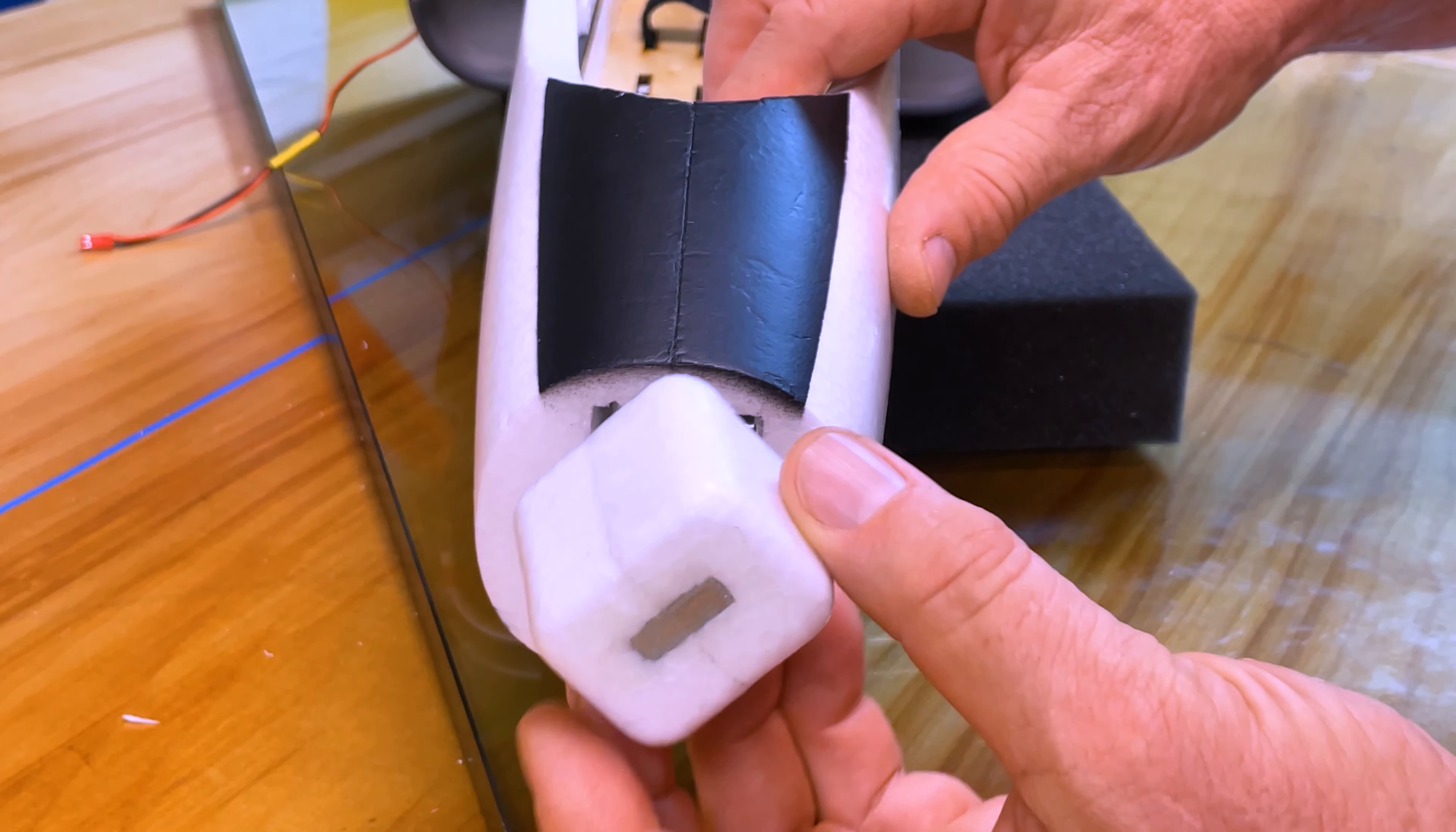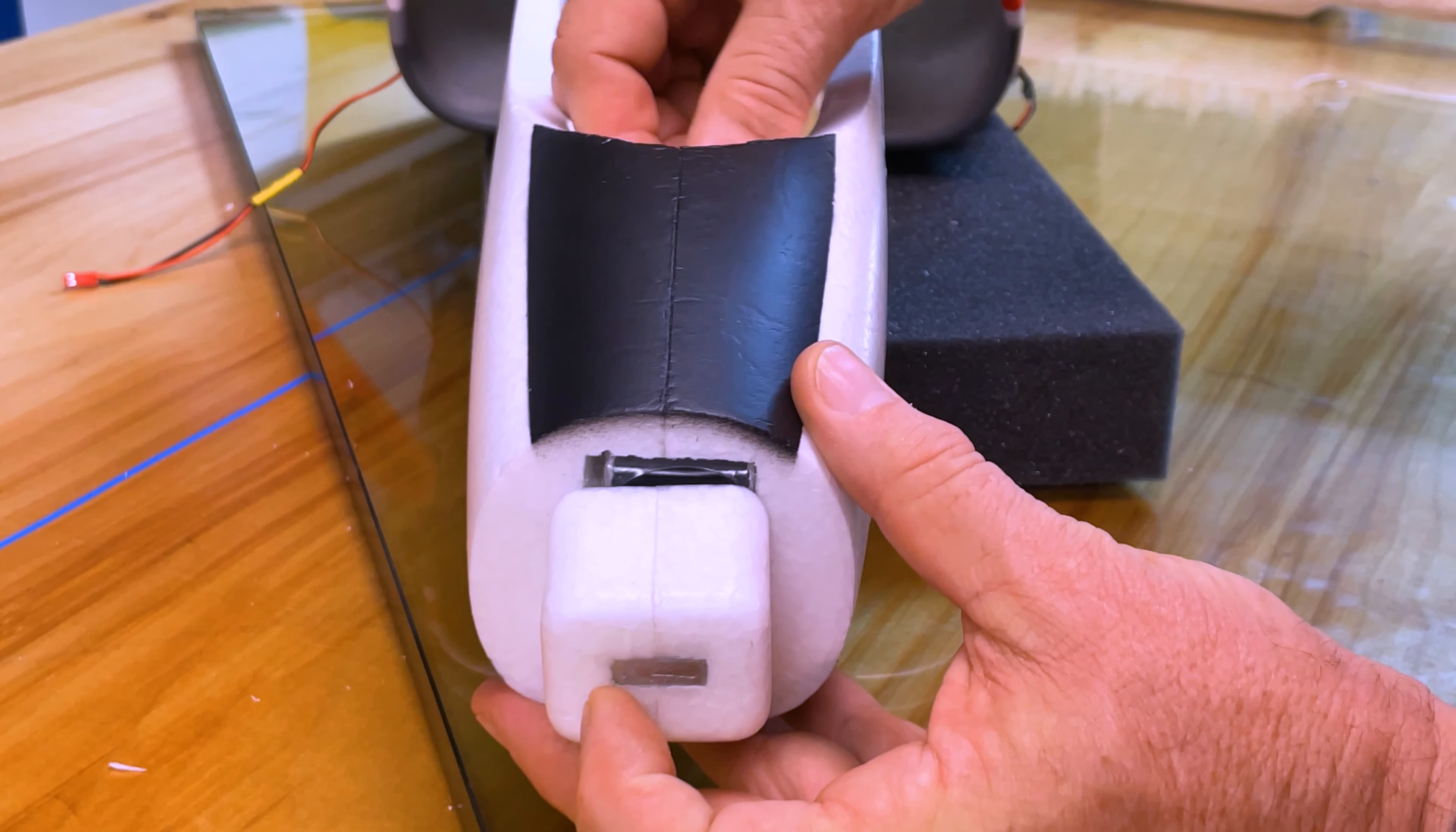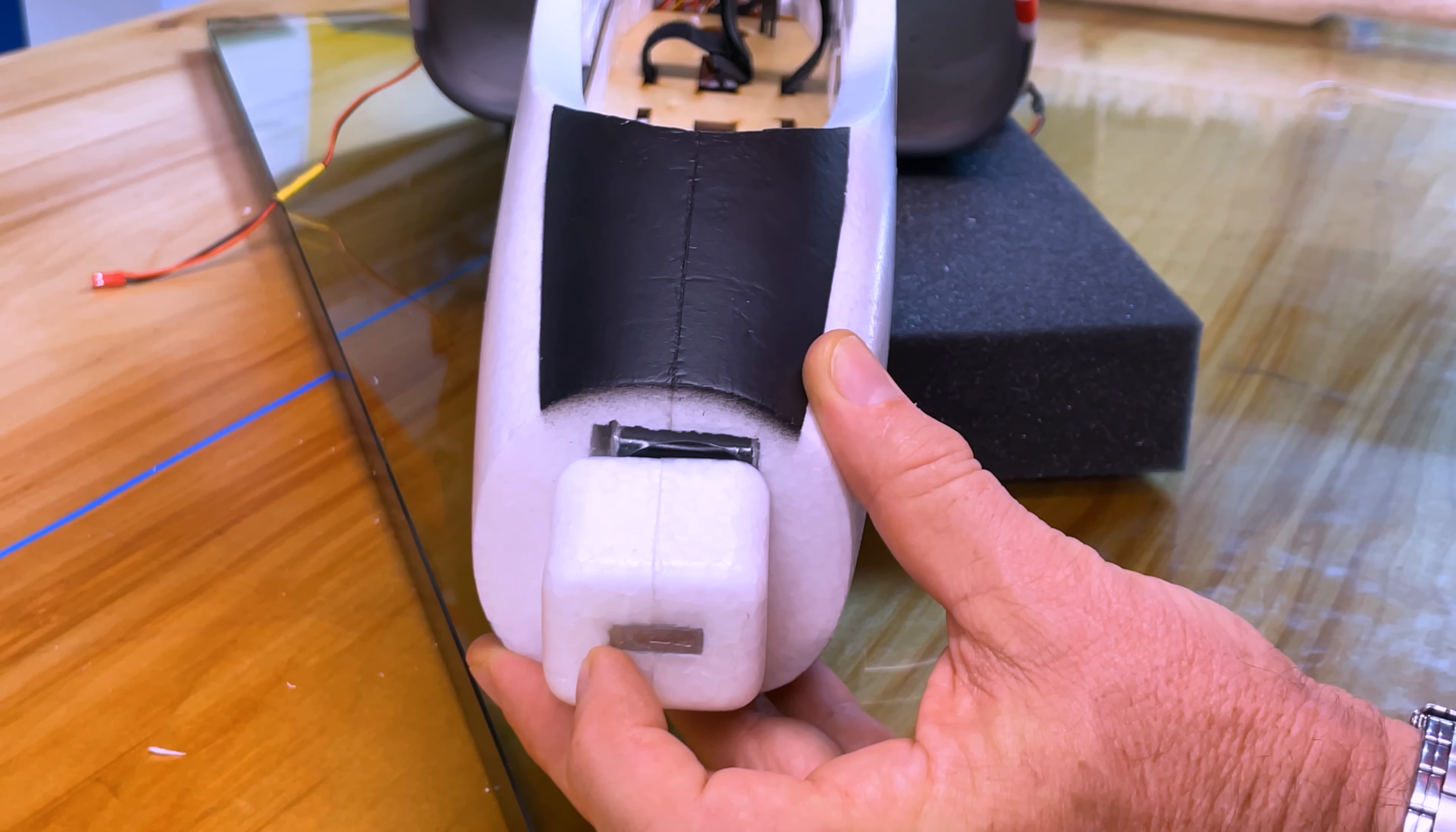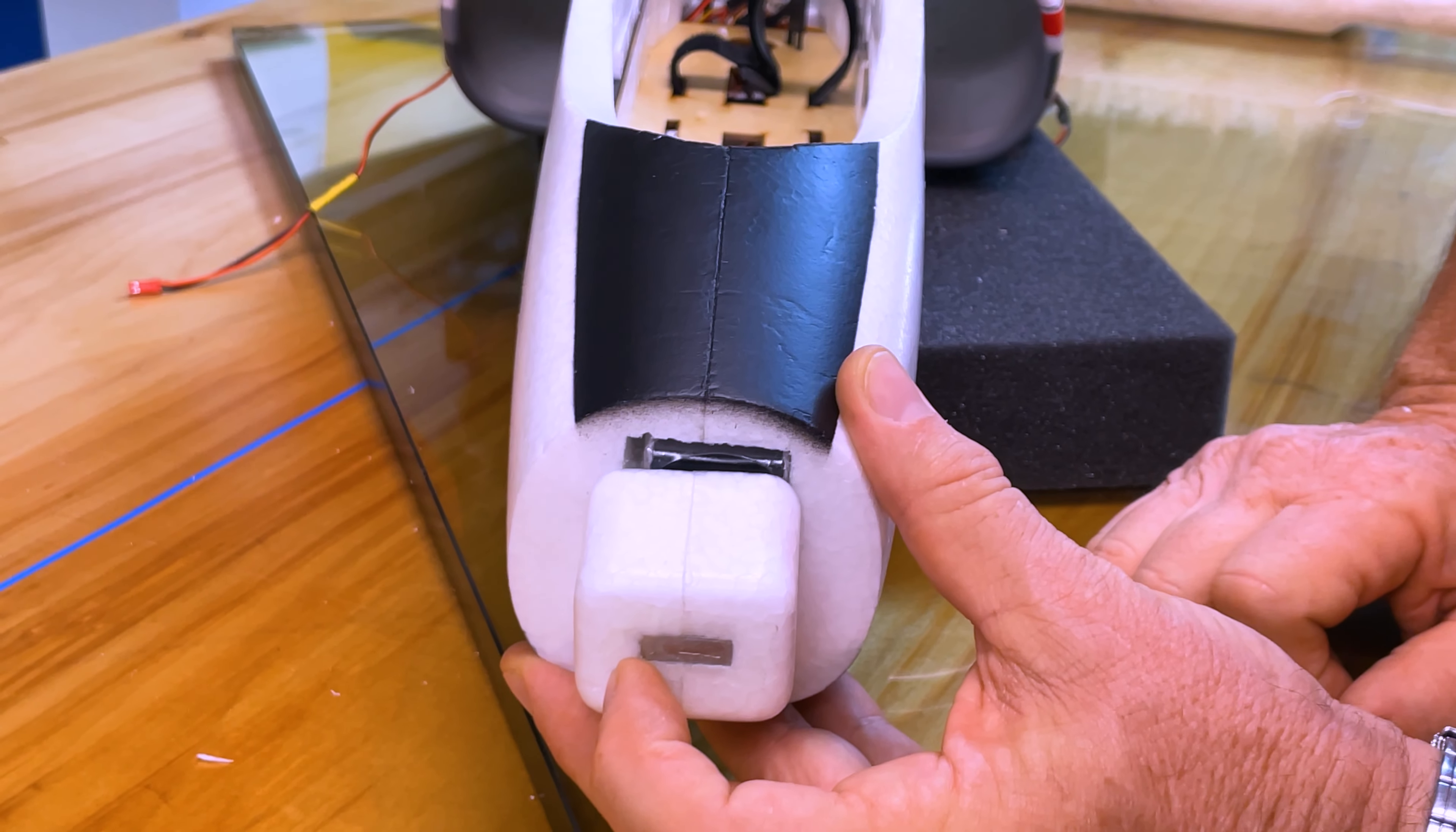And the end cap here that we cut off to make that hole, we're going to glue that right back where it was. We're going to put some foam tack or CA glue in there and we're going to glue that right back in that position. And now this becomes the backstop for the battery. So when you're pushing your battery in to go fly, you just push it up till it stops and you know you're in your far forward position, exactly where we want it.